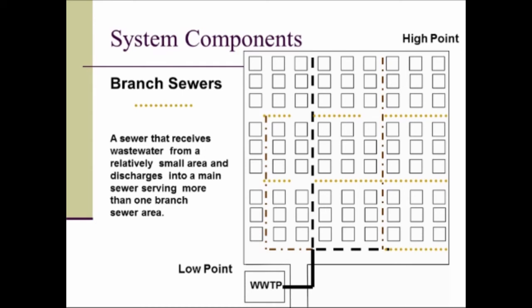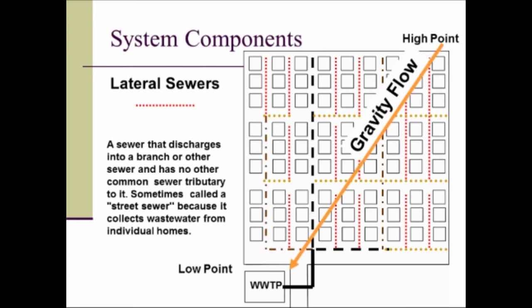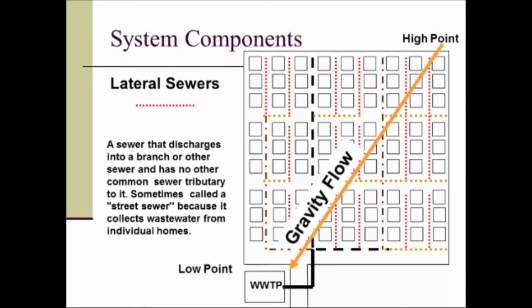Lastly we have our laterals, the red dotted lines here. A lateral sewer discharges into a branch or other sewer and has no other common sewer tributary to it. Sometimes called a street sewer because it collects wastewater from individual homes. You can see we've put in the gravity flow line—the terrain flows from the upper right hand corner down to the lower left hand corner.